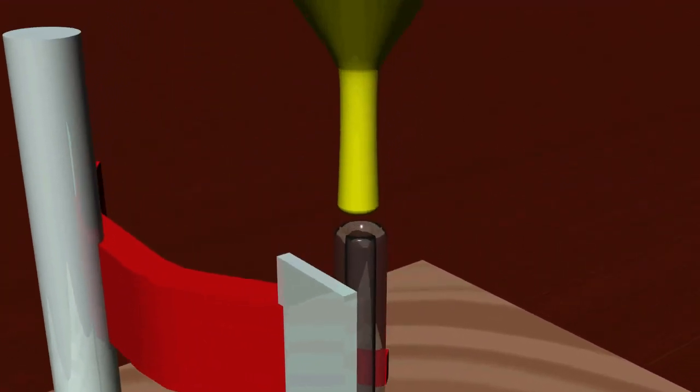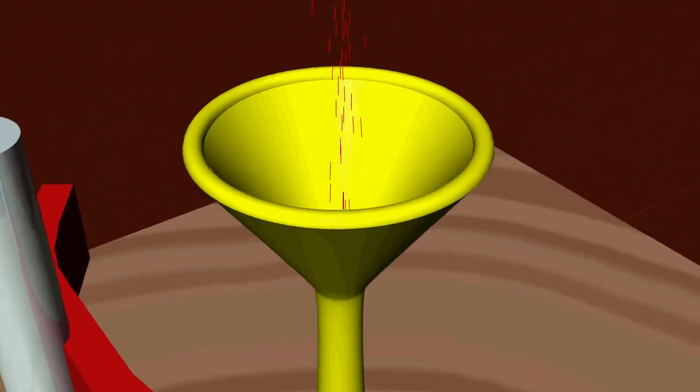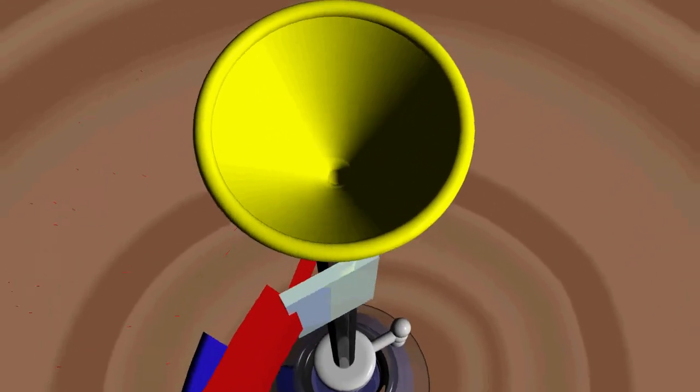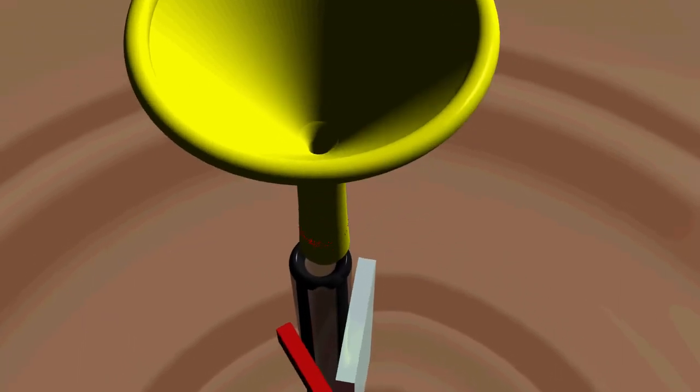Now, using a funnel, place your titrant into the burette. Do this carefully and slowly because the burette, although long, only holds about 50 milliliters and it's easy to spill.